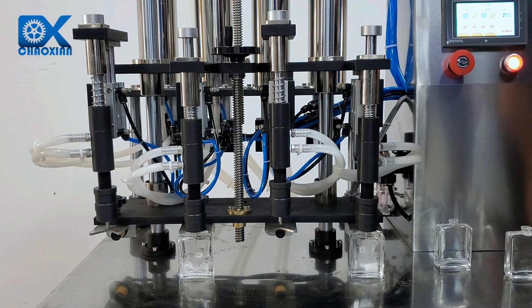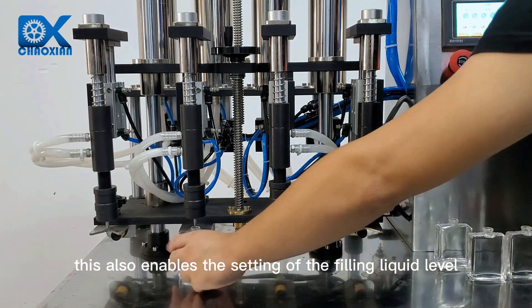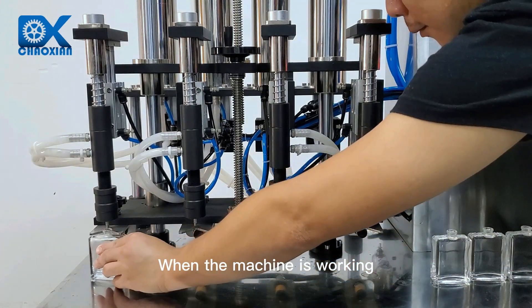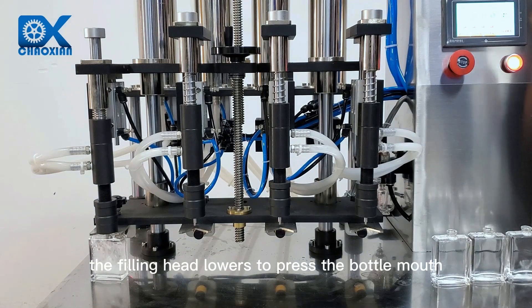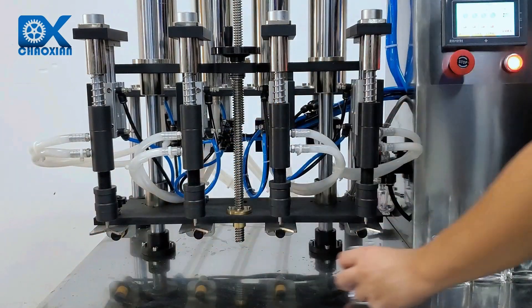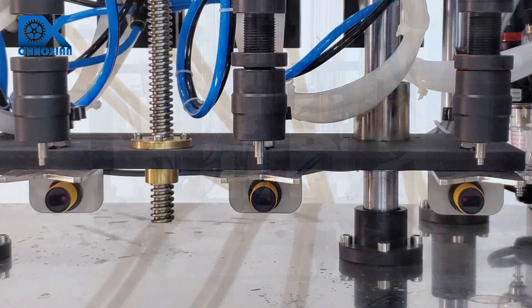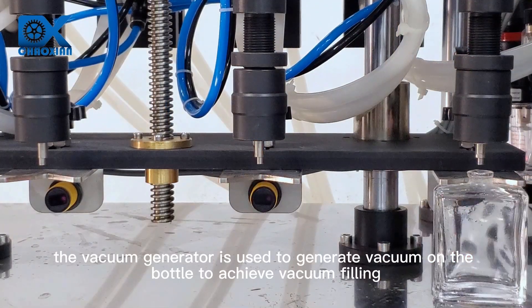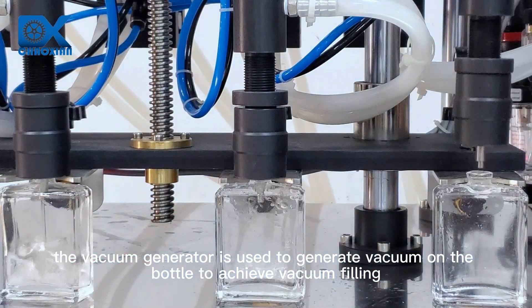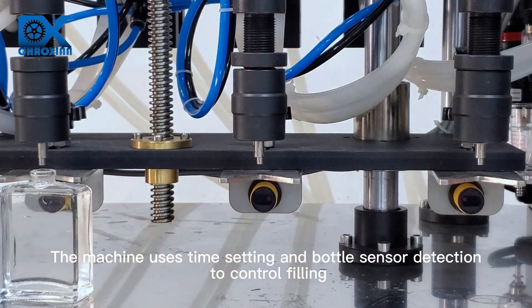This also enables the setting of the filling liquid level. When the machine is working, the filling head lowers to press the bottle mouth and achieves a sealing effect on the bottle. The vacuum generator is used to generate vacuum on the bottle to achieve vacuum filling. The machine uses time setting and bottle sensor detection to control filling.